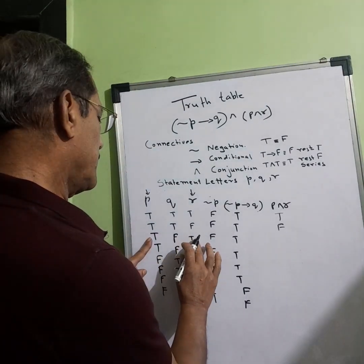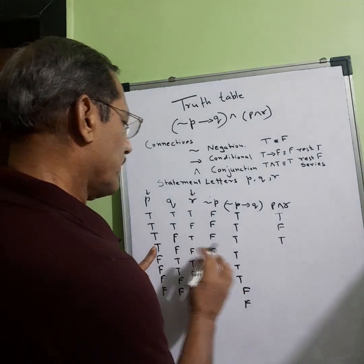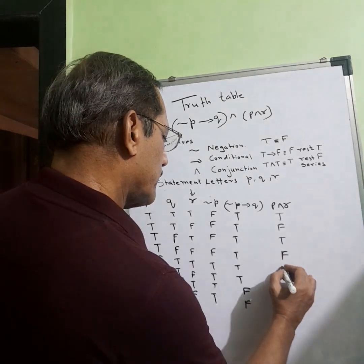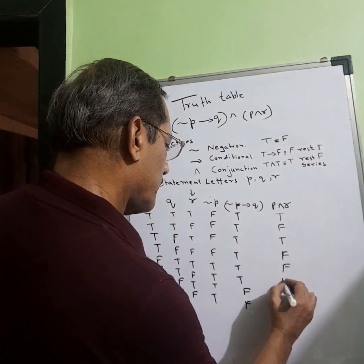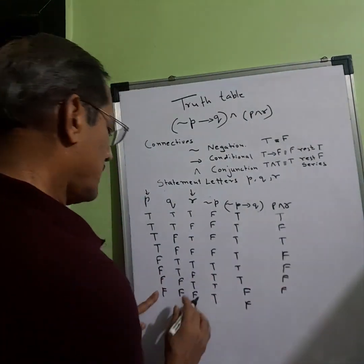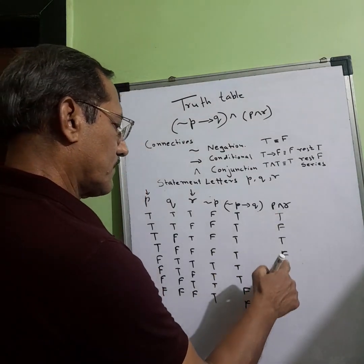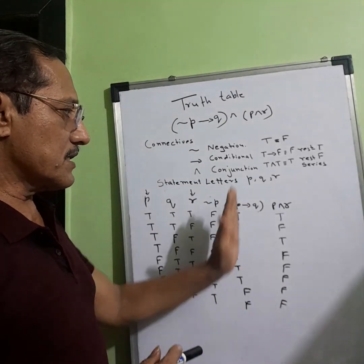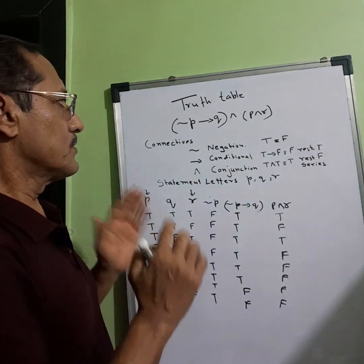Continuing p conjunction r: T T is T, T F is F, F T is F, F F is F, F T is F, F F is F — eight rows total. So that gives us the solution for the p conjunction r column.